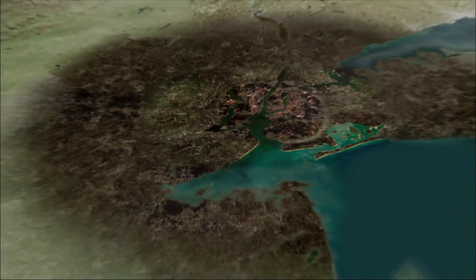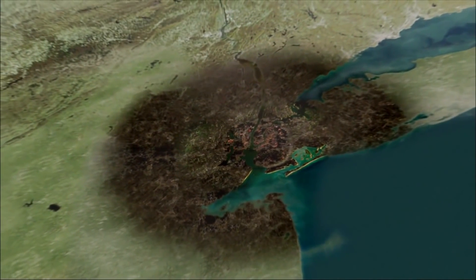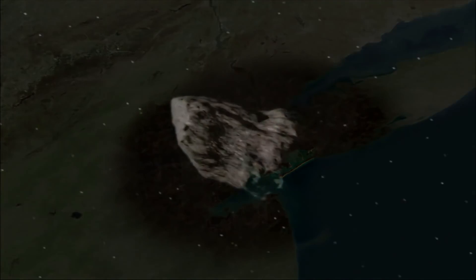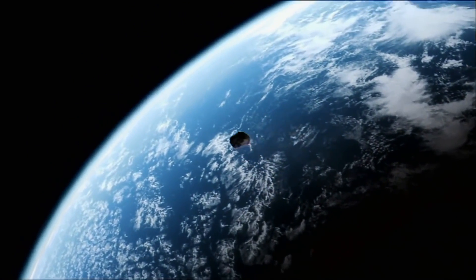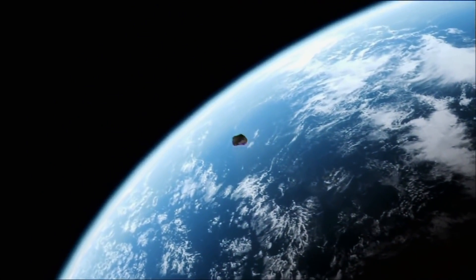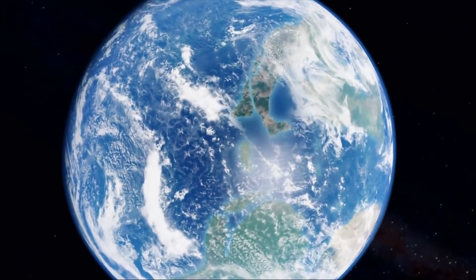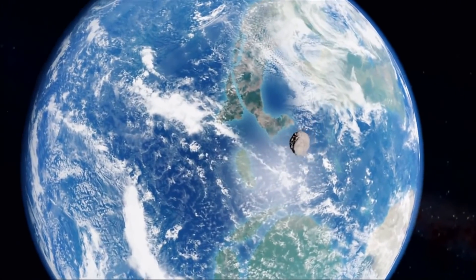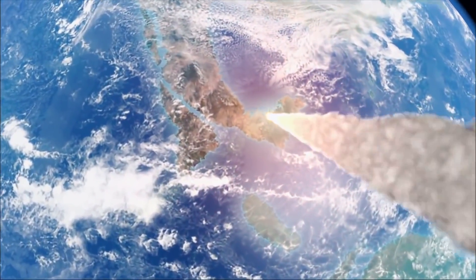For millions of years, enormous objects from space have slammed into Earth with disastrous results. One impact in the waters of the Yucatan Peninsula is blamed for the extinction of the dinosaurs 65 million years ago. But this wasn't the first mass extinction on Earth. And it probably won't be the last.